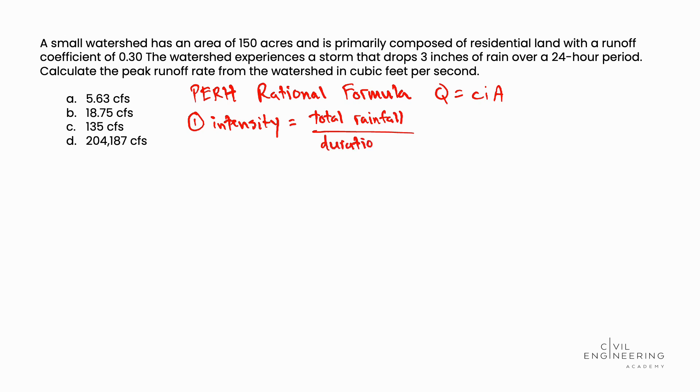To calculate this, we'll look back in the problem statement, and we see that the total rainfall is 3 inches of rain over a 24-hour period. Performing this calculation, 3 divided by 24, equals 0.125 inches per hour. The inches per hour unit is consistent with the I variable in the Rational Formula.